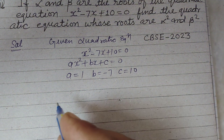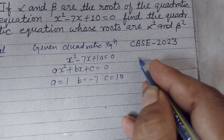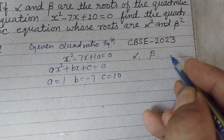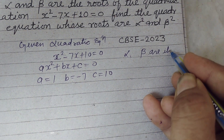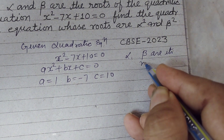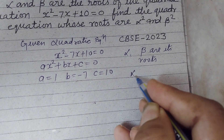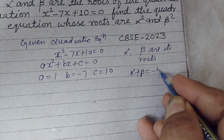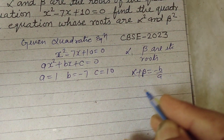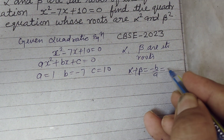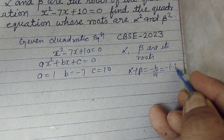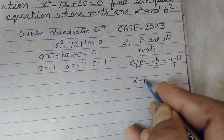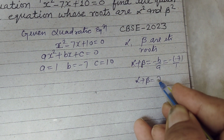If alpha and beta are its roots, then sum of roots: alpha plus beta equals minus b over a, which is minus minus 7 upon 1, so alpha plus beta equals 7.